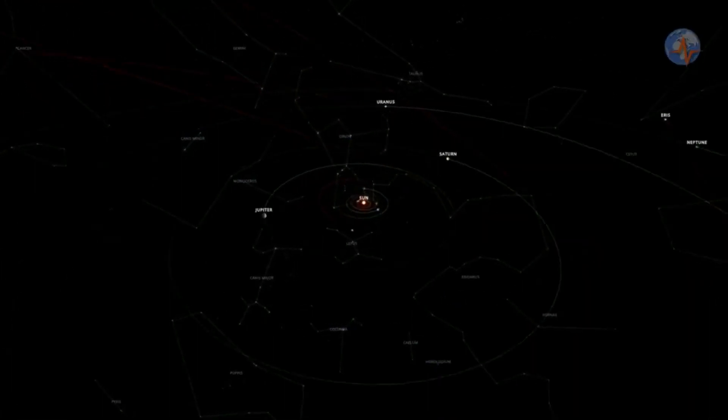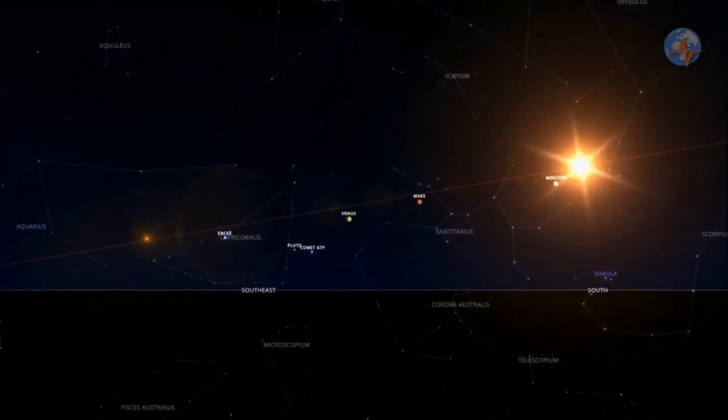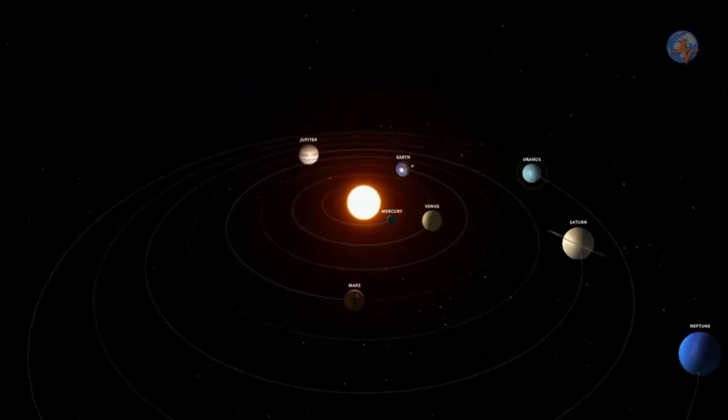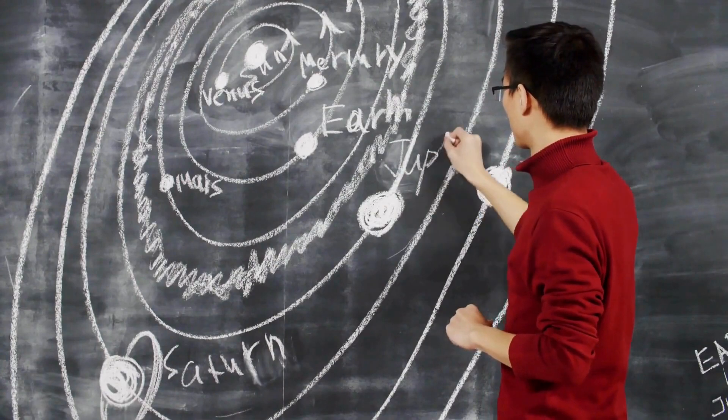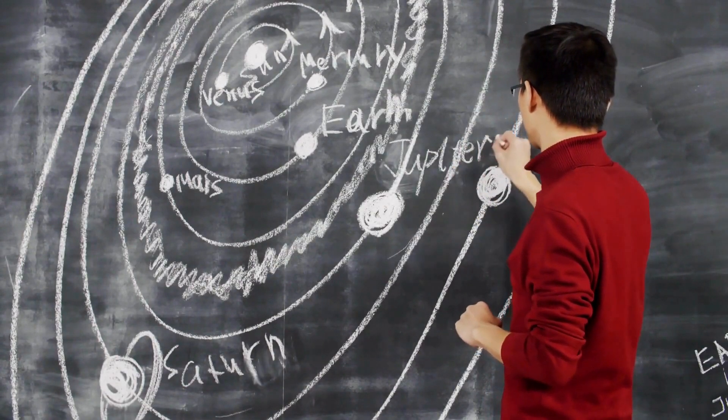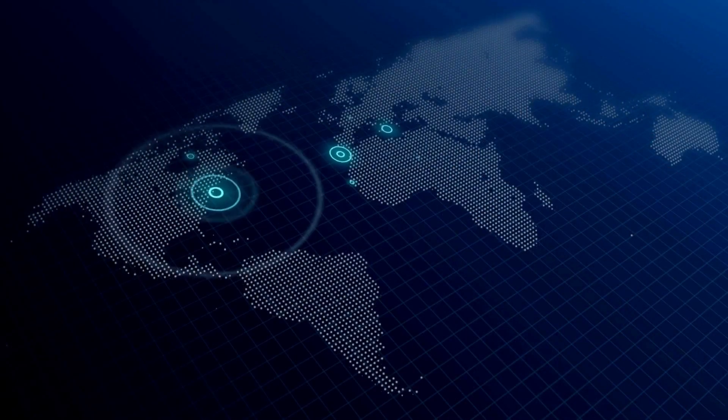An earthquake prediction must define three elements: Number one, the date and time. Number two, the location. And number three, the magnitude.